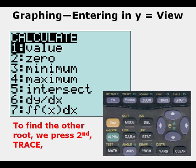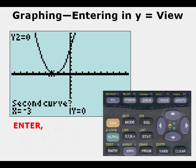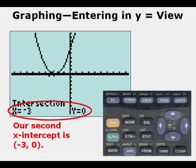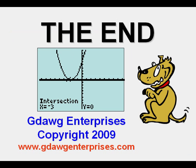We can find the other root by pressing 2nd, Trace, 5, then Enter multiple times, and we get x equals 3, y equals 0. So our two solutions are x equals negative 2 and x equals negative 3. Those are our roots. Hope this introduction to graphing has been useful — check out the other lessons.